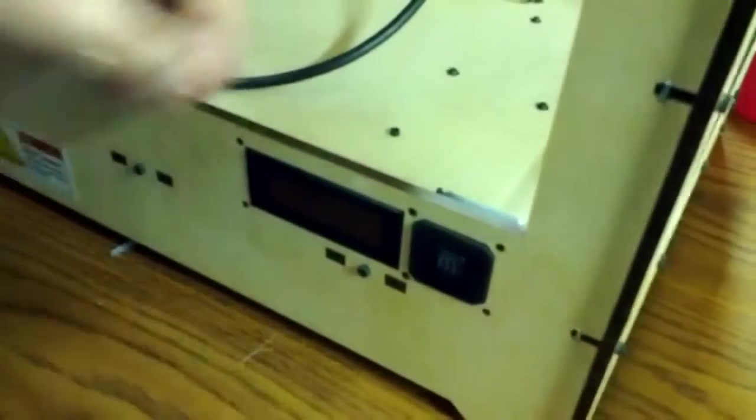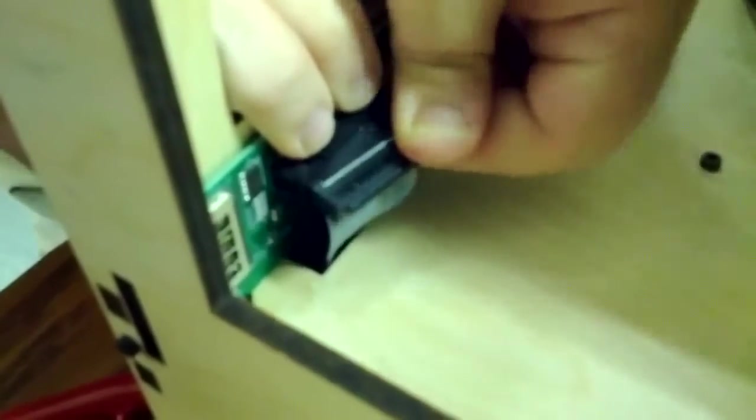Next, what you're going to do is remove the ribbon cable from the back of the interface board, right here. It'll just pop right out.